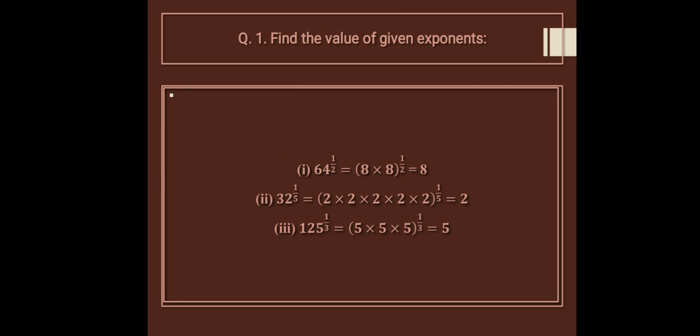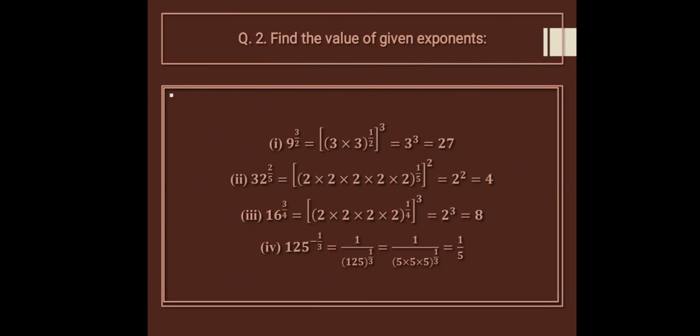125 raised to the power 1 upon 3 — cube root. Here 1 upon 3 means cube root, so we multiply 5 three times: 5 into 5 into 5, which equals 125. So the cube root of 125 is 5. Now in question number 2, find the value of the given exponents.